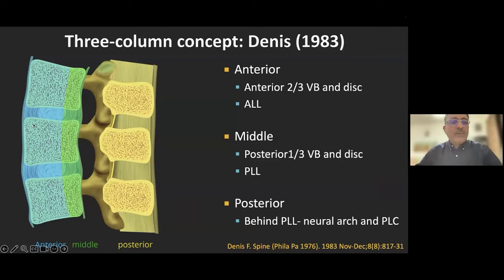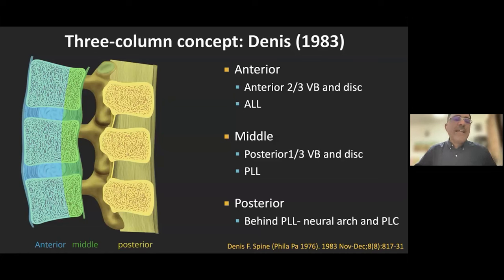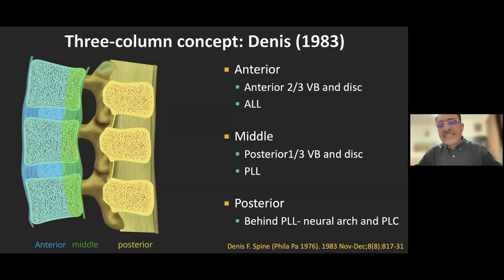Denis divided Holdsworth's anterior column into two parts. The anterior column consists of the anterior two-thirds of the vertebral body, anterior two-thirds of the disc, and the ALL. The middle column consists of the posterior one-third of the vertebral body, posterior one-third of the disc, and the PLL. Everything behind the PLL is the posterior column. Denis proposed that the middle column is critical for stability, and that fracture or injury of any two contiguous columns results in instability — whether anterior and middle, or middle and posterior, or all three columns.